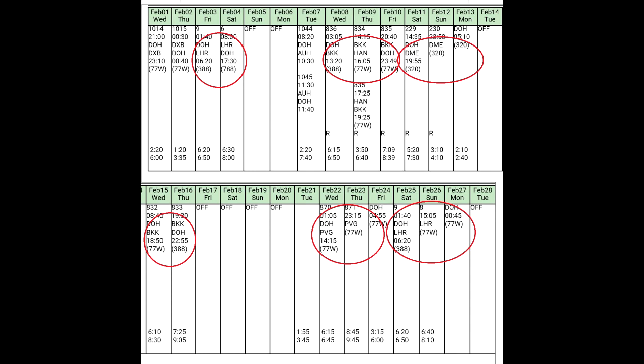Now let's see what flights we have. You can see some three-letter codes — you don't know what they mean now, but you'll learn them shortly after you start flying. DOH is Doha, the base. All the time you leave Doha, go to a destination, and then return to the base. For February we have six layovers.